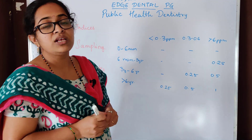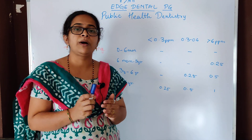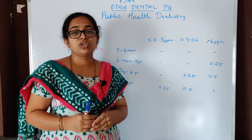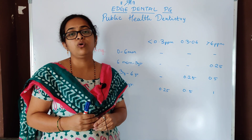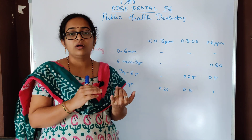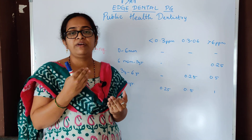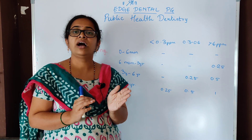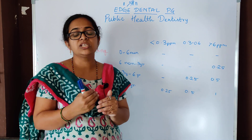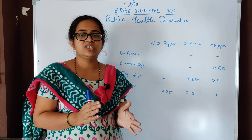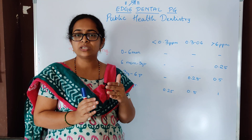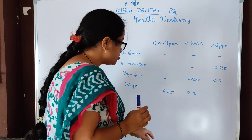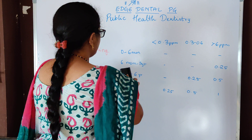Another question asked which fluoride compound has higher caries prevention compared to others. The options recalled were sodium fluoride, APF, and stannous fluoride. Among these three, stannous fluoride has the highest caries prevention. However, stannous fluoride is not commonly used due to taste inhibitions and low shelf life. These were the two questions from fluoride.